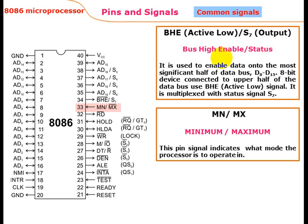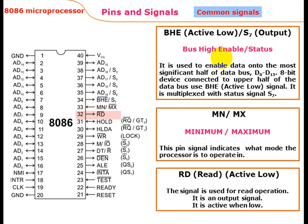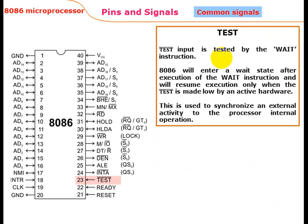MN/MX indicates minimum or maximum mode. RD (active low) is used for read operations; it is an output signal, active low. TEST (active low) input is tested by the WAIT instruction — the 8086 will enter a wait state after execution of the WAIT instruction and will resume execution only when TEST is made low by active hardware.